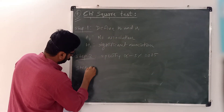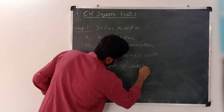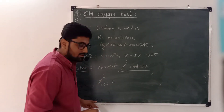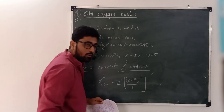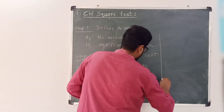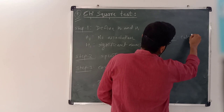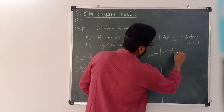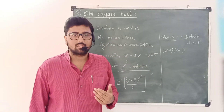Step 3: Compute the chi-square statistic. Chi-square calculated equals the sum of (O minus E) squared divided by E, where O is the observed frequency and E is the expected frequency. Step 4: Calculate the degree of freedom. The degree of freedom is (R minus 1) multiplied by (C minus 1), where R is the number of rows and C is the number of columns in the contingency table.